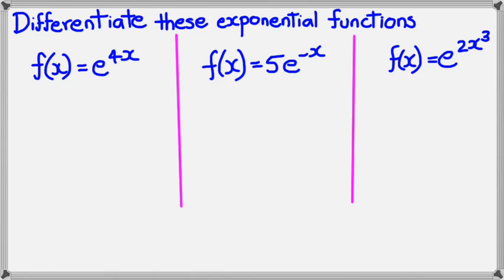So I'm going to do the first one on the left here. If I want to work out f'(x), what I need to do is differentiate the power, which is 4x. If I differentiate, I get 4. And then I multiply by the function itself. So I multiply by e^(4x). That's it.